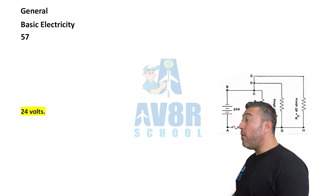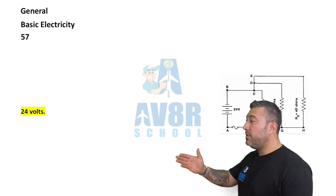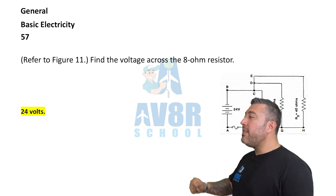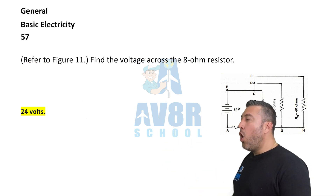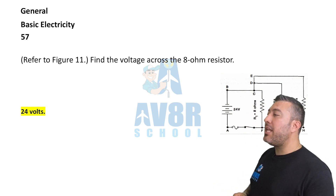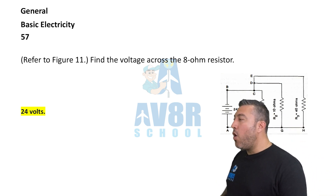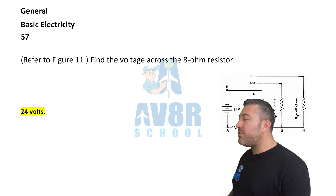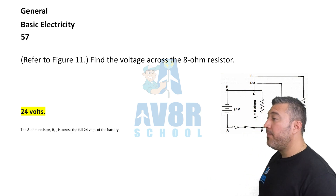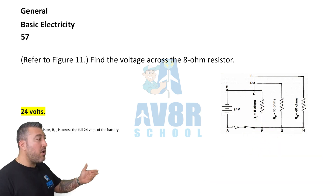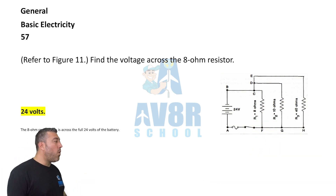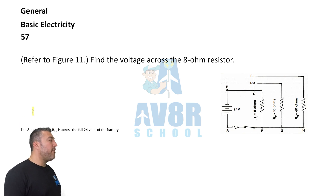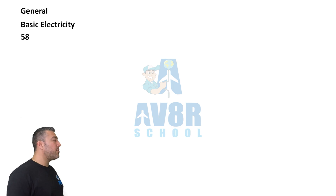Question 57. Another figure — Figure 11. Find the voltage across the 8 ohm resistor. It's going to be 24 volts.